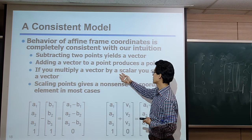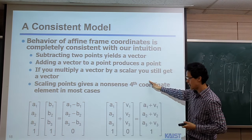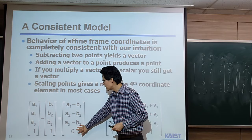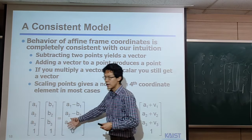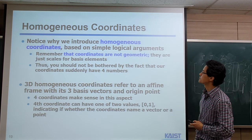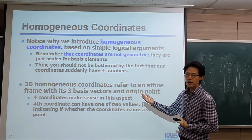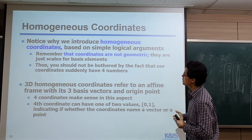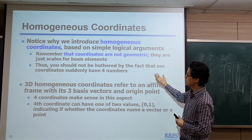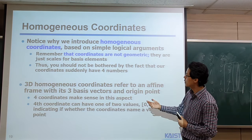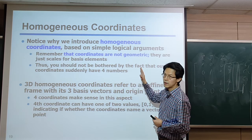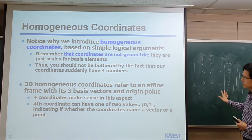You can multiply a vector by a scalar and still get a vector — the last coordinate stays 0. But if you scale a point, the last coordinate will have some value other than 0 and 1, which doesn't make sense. So scaling a point doesn't make sense. Again, we introduced a consistent coordinate system. The coordinate itself is not an intrinsic geometric quantity — it's just a naming scheme. Depending on the perspective of defining those points, you can have a different coordinate. Using the fourth coordinate, differentiating point and vector also works fine.